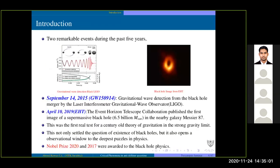Coming to the introduction, in the past two years it has been very fruitful for theoretical physics and we have two major events. One is gravitational wave detection, and another is a black hole image we have obtained from the Event Horizon Telescope collaboration. This was a first real test for the century-old theory of gravitation proposed by Einstein in the strong gravity limit, and this has not only settled the very existence of black holes but also opens up a lot of observational windows to deep processes in physics.